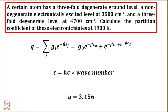This particular numerical problem talks about an atom having a threefold degenerate ground level, then a non-degenerate electronically excited level, and then a threefold degenerate next level. So in a sense, we are talking about the electronic contribution to the overall partition function. We will start with the definition of partition function: q = Σⱼ gⱼ exp(−βεⱼ).